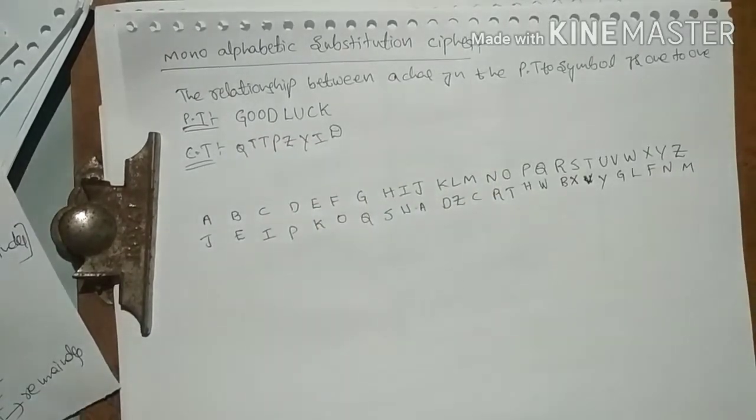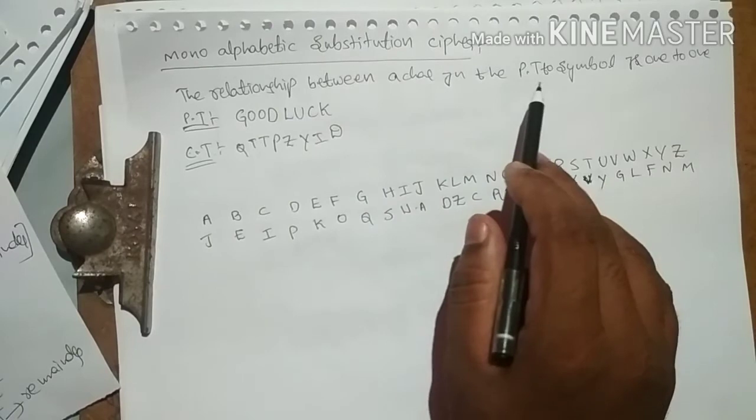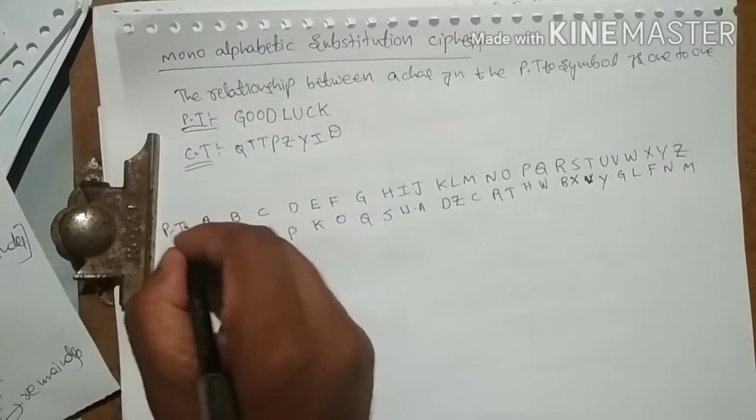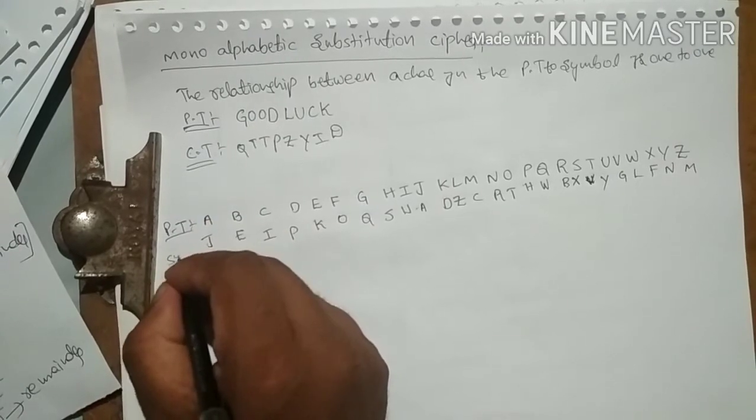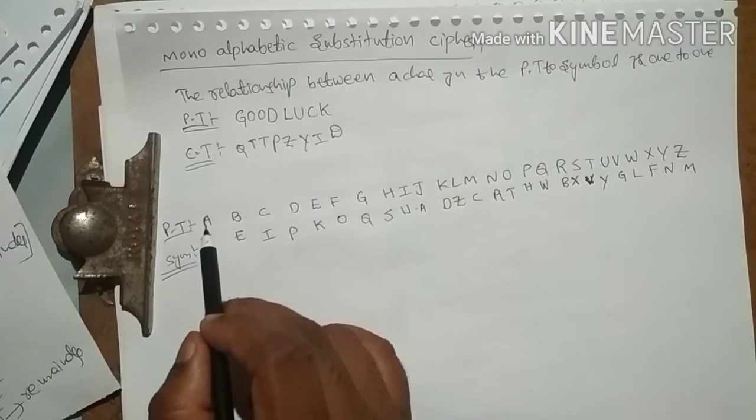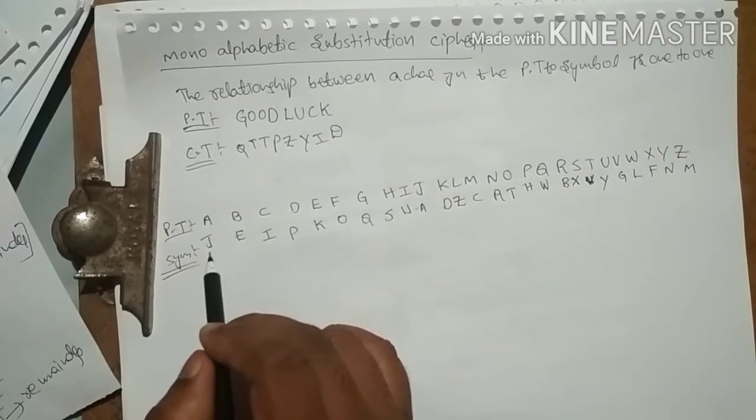So this is a plaintext, this is a cipher text. The relationship between a character in the plaintext to a symbol is one to one. This is a plaintext and these are symbols.